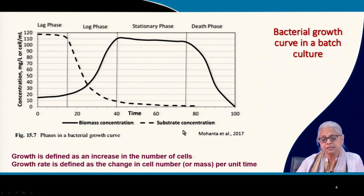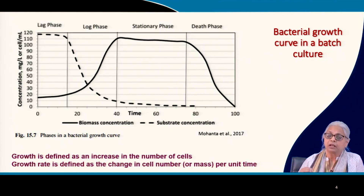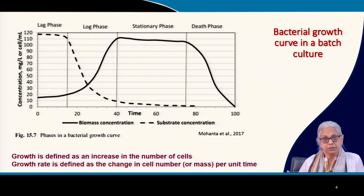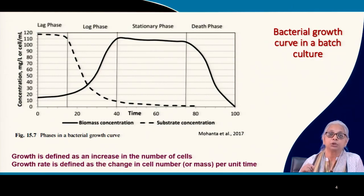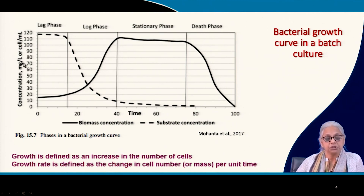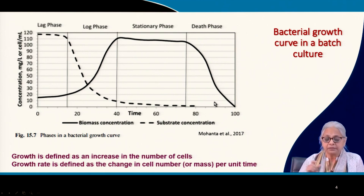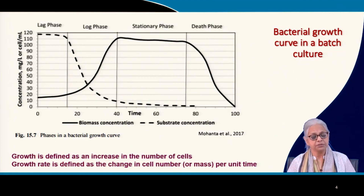Concentration can be measured as volatile suspended solids or as number of cells. By microscopy, you get the total number of cells; by plate counts, you measure the number of living or reproducing cells. On the y-axis is concentration and on the x-axis is time. Initially, biomass shows very little increase in cell concentration. The question is: what is the reason for that?